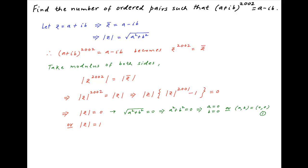In the second case, we have the absolute value of z is equal to 1. Let's call this Result 2.